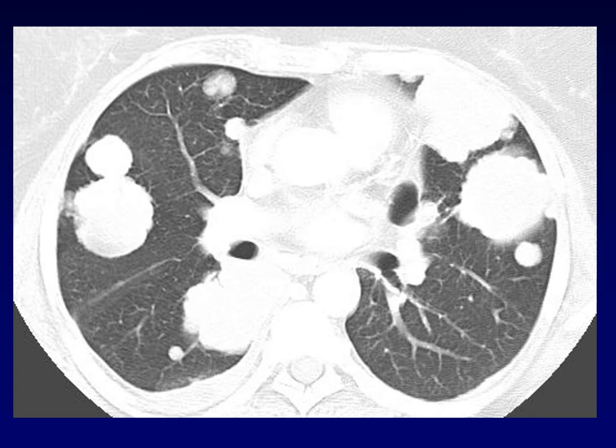This is an example of the cannonball metastases that are classic for recurrent adenoid cystic carcinoma. Sometimes these appear soon after the diagnosis is made; sometimes they appear only after decades of remission. This is truly a capricious tumor.